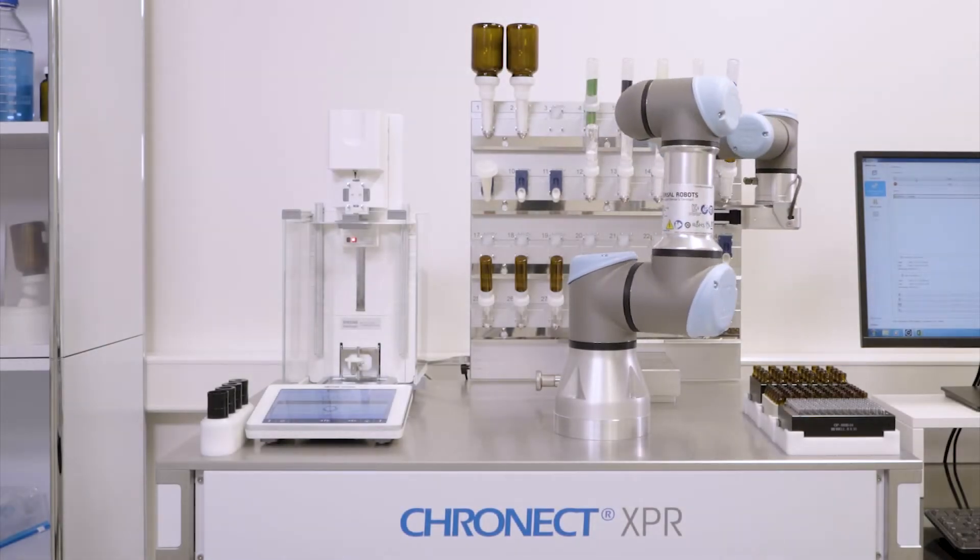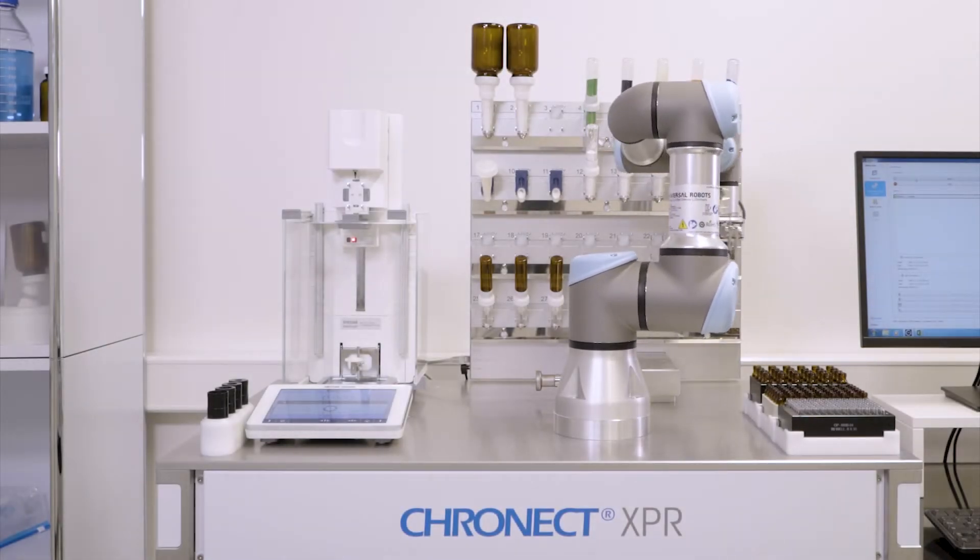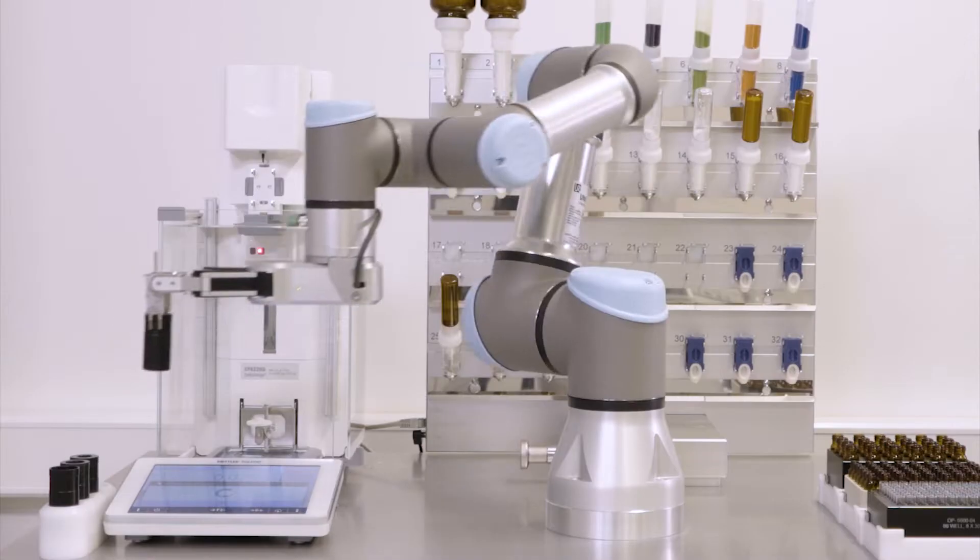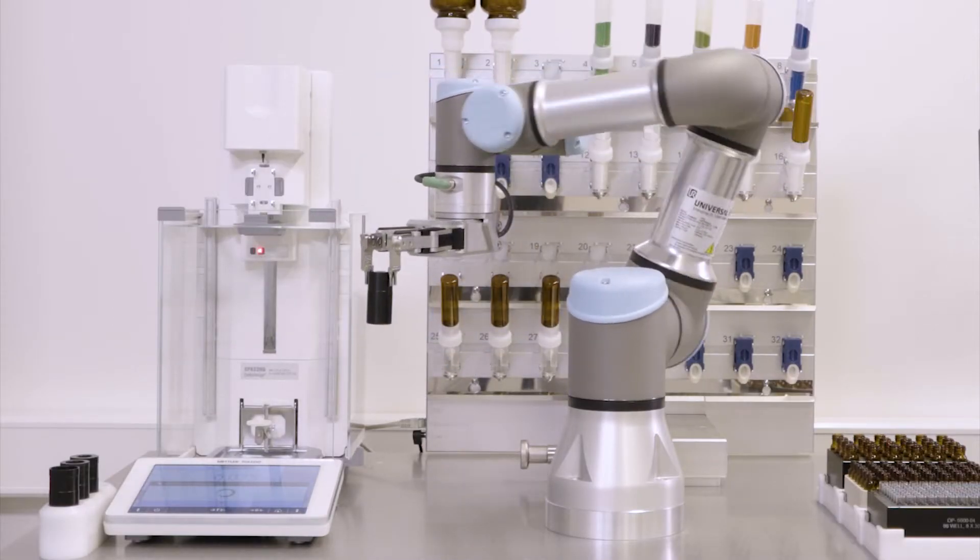The Cronect XPR system combines the advanced weighing technology of the XPR automatic balance with a six-axis robotic arm to enable robotic powder formulation.